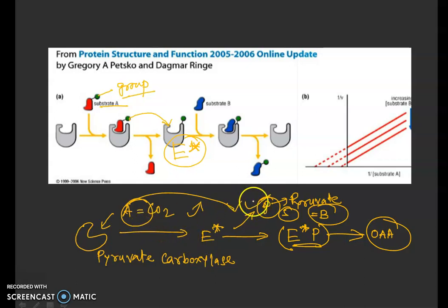You can see product is produced before the second substrate is connecting to the enzyme because before that enzyme is not eligible to bind or interact with the second substrate. Both of the substrates cannot interact. Finally, you get the new product that is oxaloacetate. This is how the ping-pong mechanism functions.